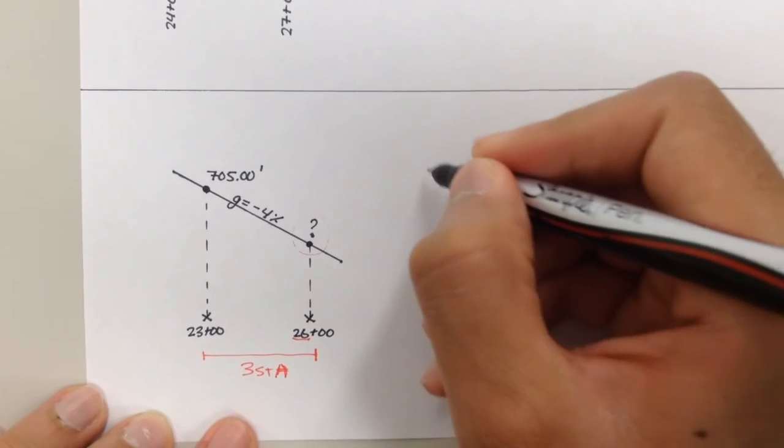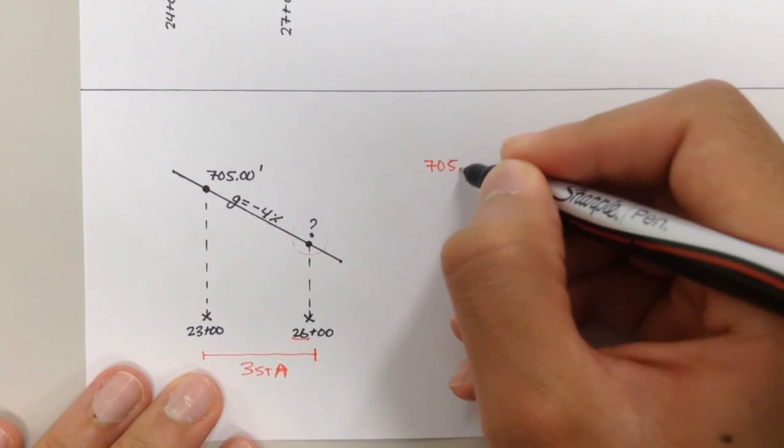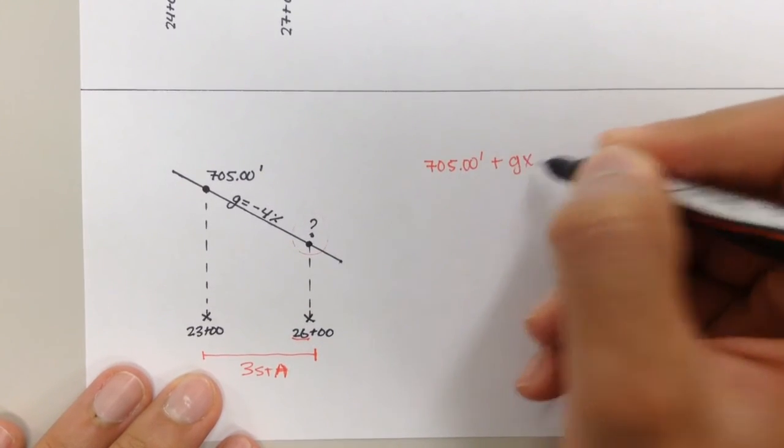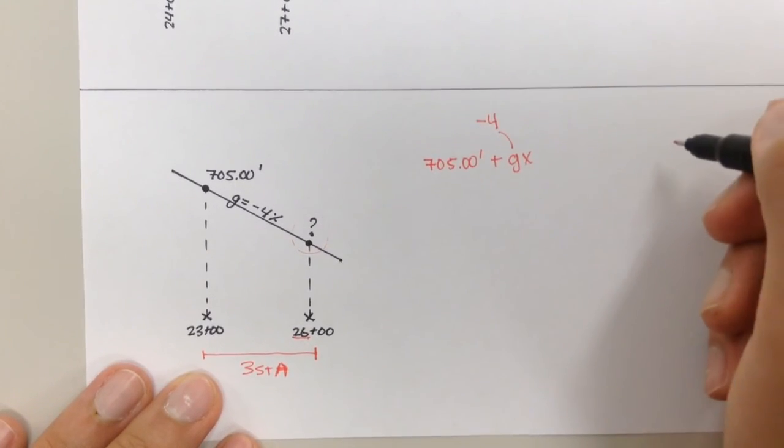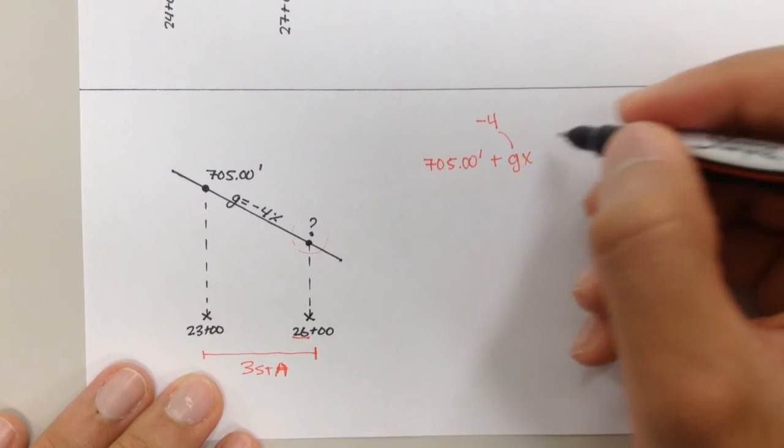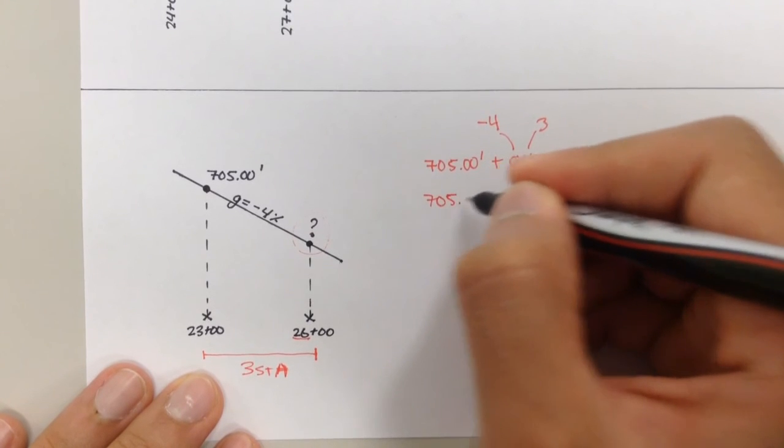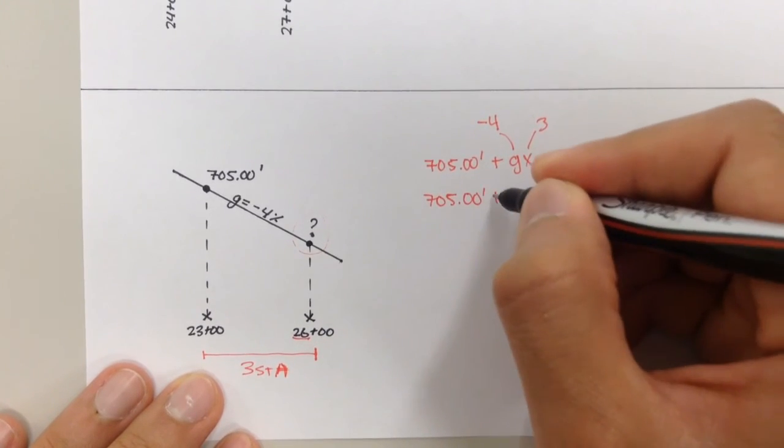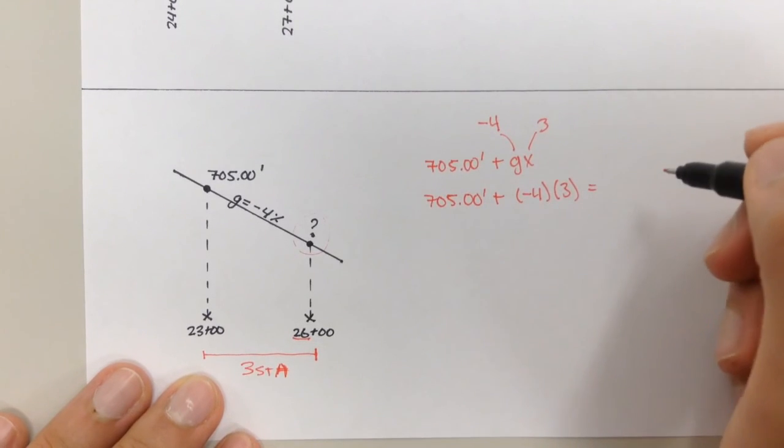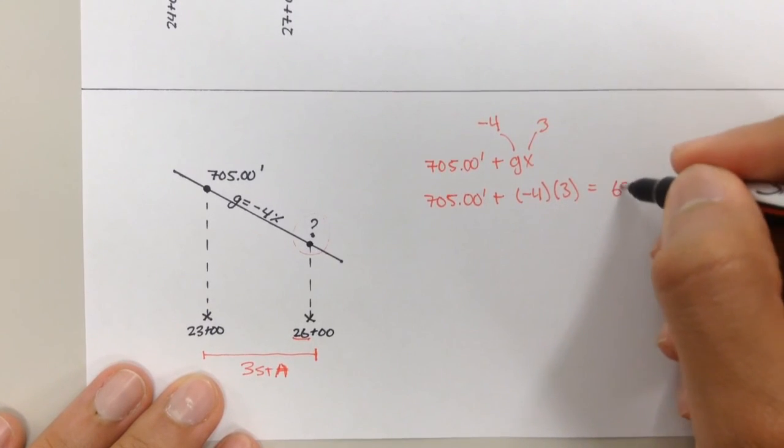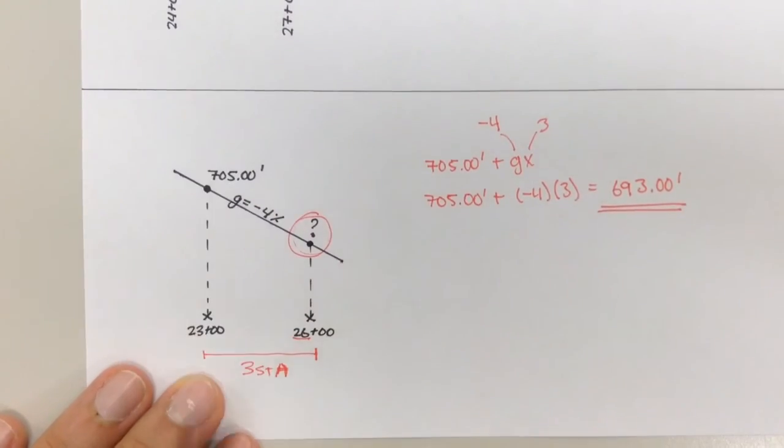So we can take our elevation starting from the left side of the line, add GX to it, and our GX is negative 4%, and our X is three stations. So if I did 705.00 plus negative 4 times three stations, that would give me 693.00. And that's the elevation of these points.